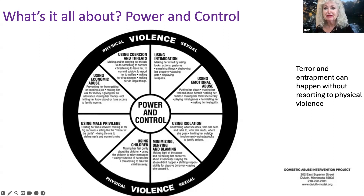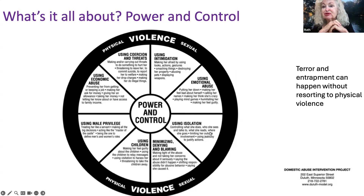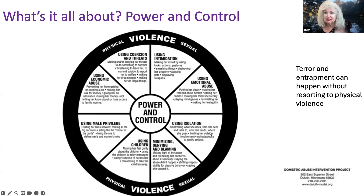Getting down to the five o'clock portion of the power and control wheel — minimizing, denying, and blaming: making light of the abuse, not taking her concerns seriously, saying the abuse didn't happen, shifting responsibility for abusive behavior, saying she caused it. What do we call that? DARVO — Deny, Attack, Reverse Victim and Offender. It's so common it's got an acronym attached to it.